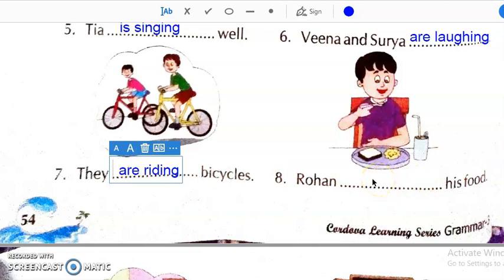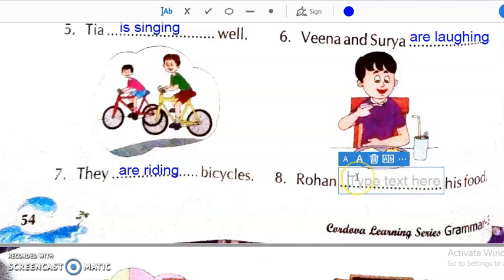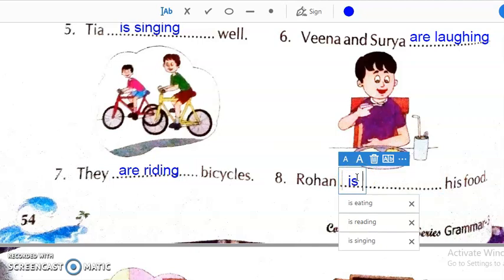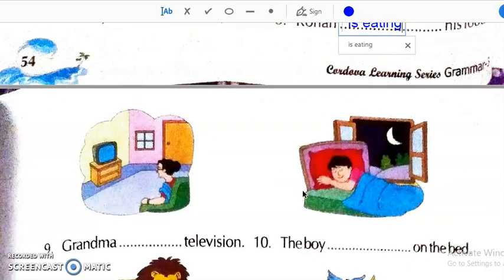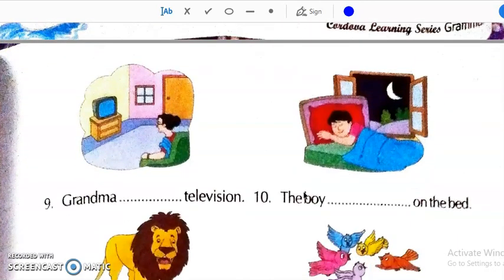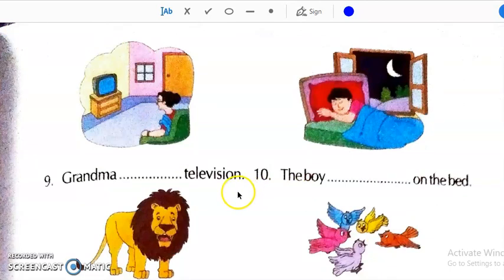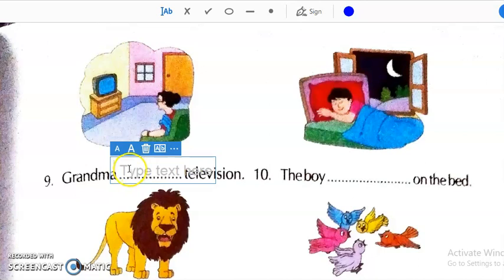Wo kya kar raha hai? Khana kha raha hai. So, for that we will write is eating. Okay. Now, on the next page grandma dash television. What will we write? Here we will write is watching.